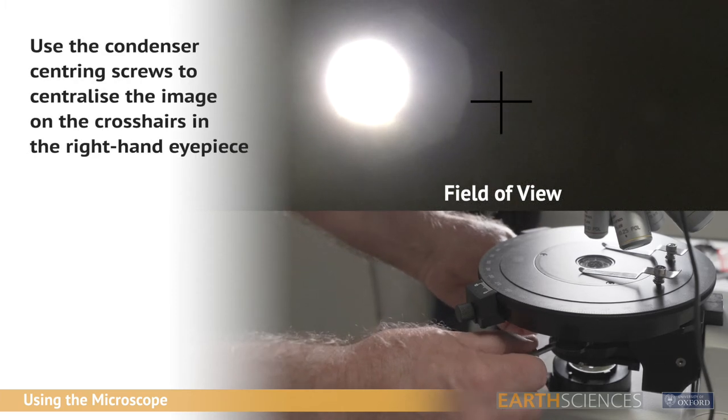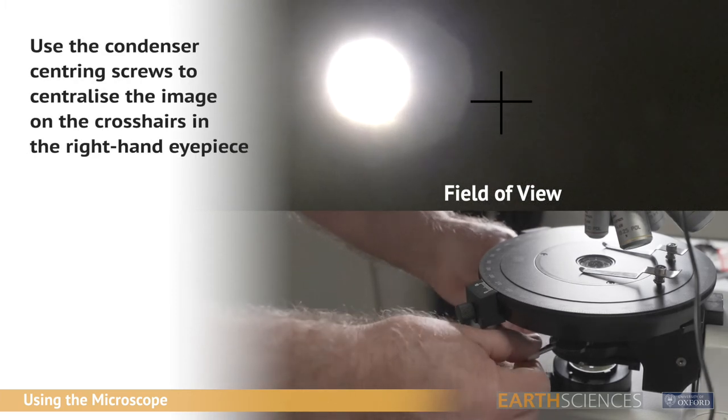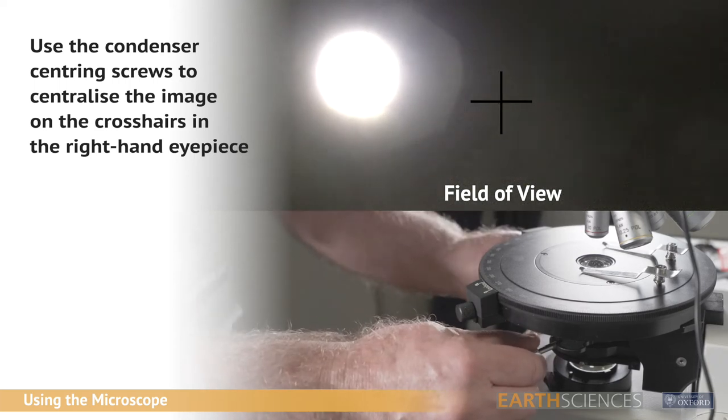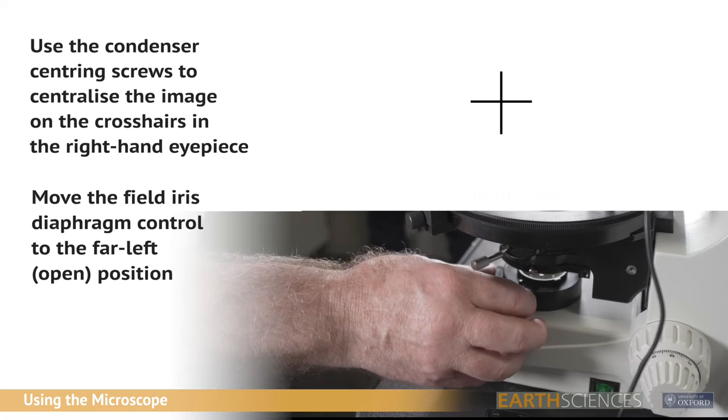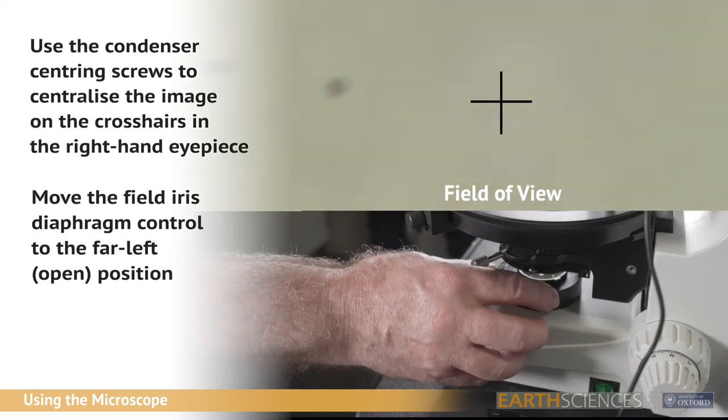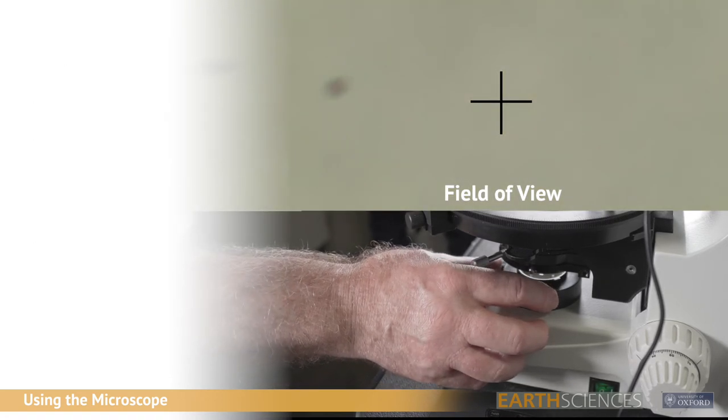Use the condenser centering screws to adjust the image until it's centred using the crosshairs in the right eyepiece. Move the field iris diaphragm control fully over to the left. The sub-stage condenser is now properly set up for use.